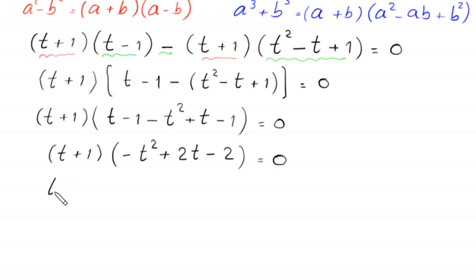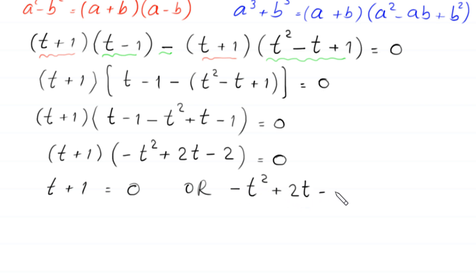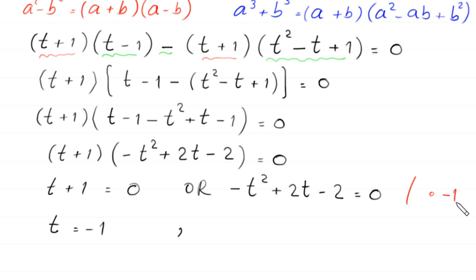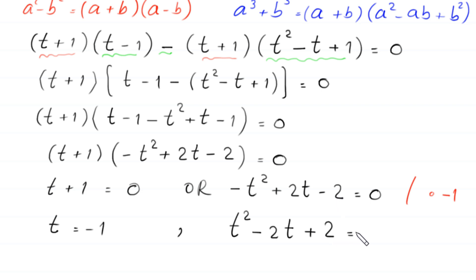From here, either (t + 1) = 0, giving t = −1, or (−t² + 2t − 2) = 0. From this second equation, we multiply both sides by −1, so −t² becomes +t², +2t becomes −2t, and −2 becomes +2, giving t² − 2t + 2 = 0.